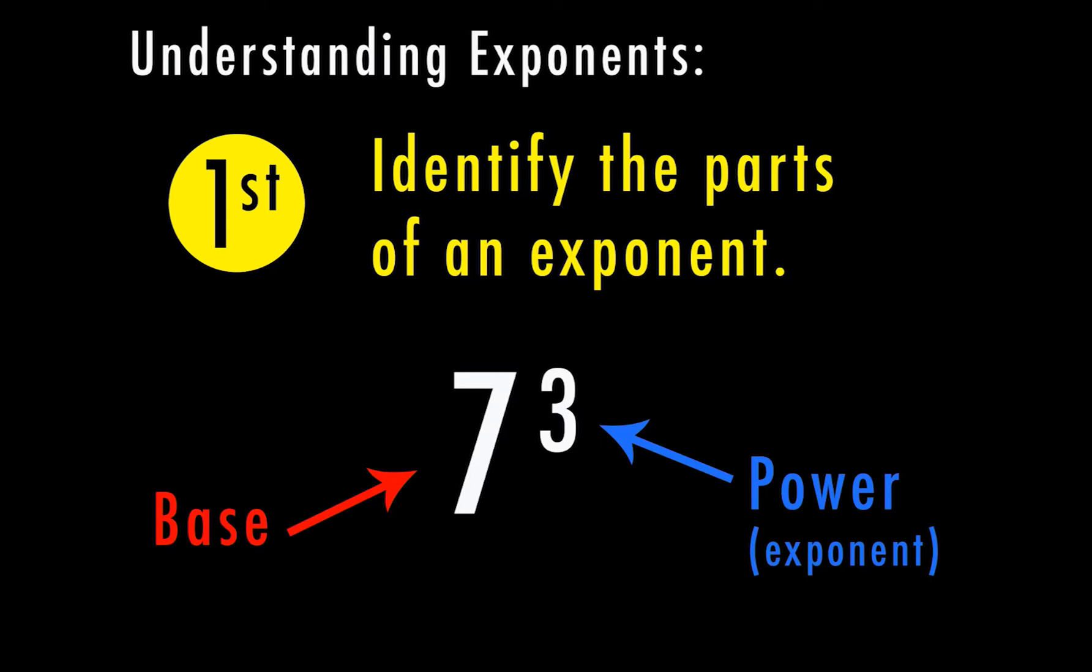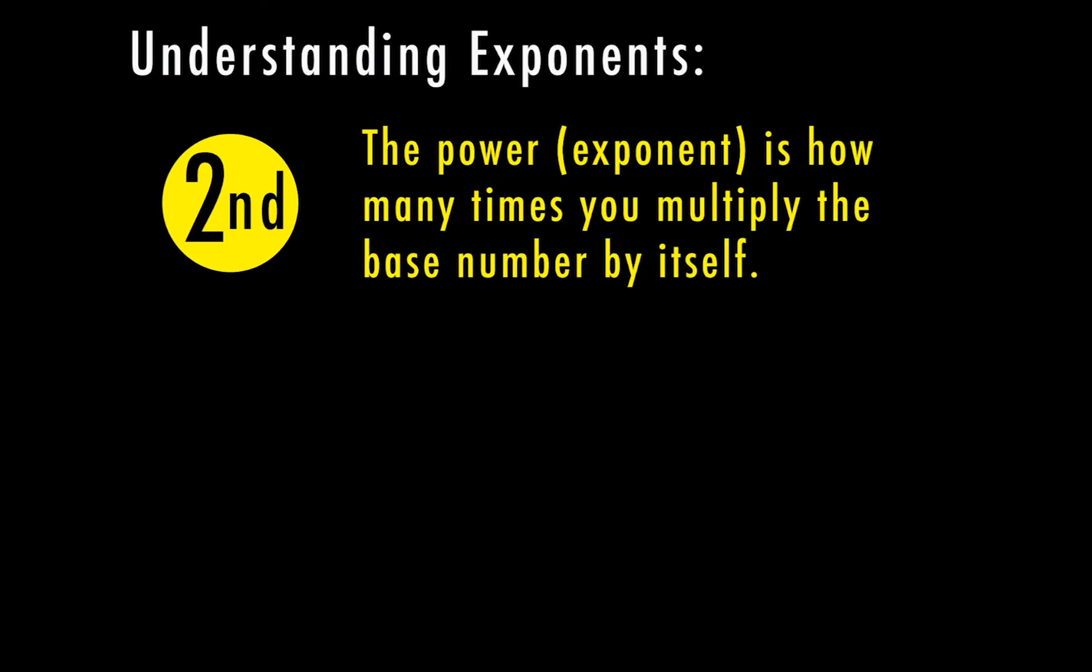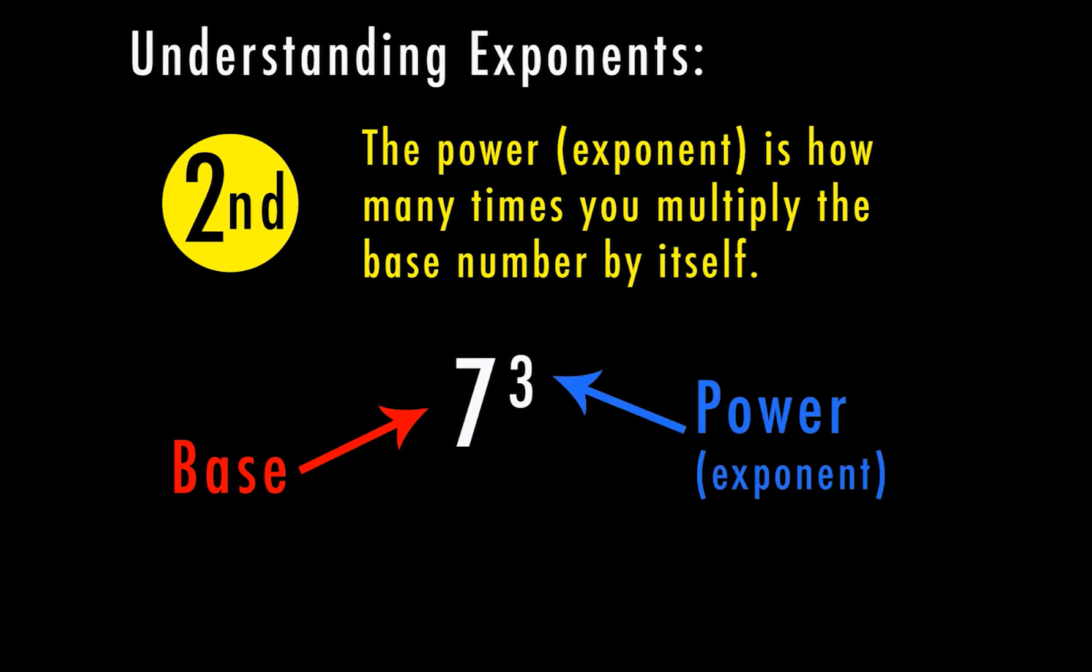So next we need to figure out what this means. For the second step, the power or the exponent is how many times you're going to multiply the base number times itself. So let's talk about this again here. We have 7 to the third power. The base is my 7. The 3 is my power. So the 3 is telling the 7 how many times to multiply. So this means 7 times 7 times 7.